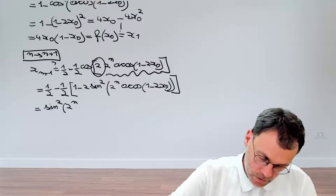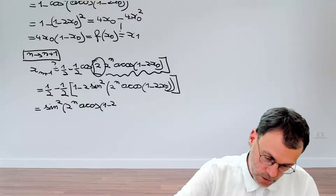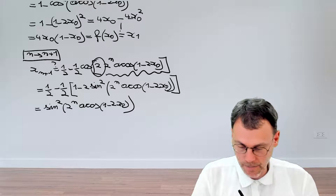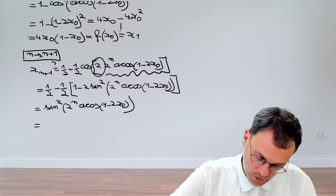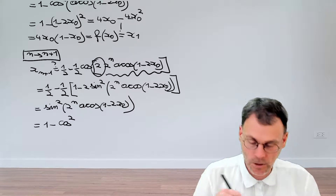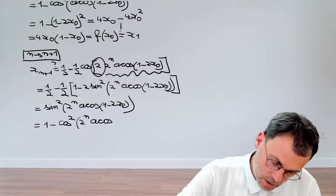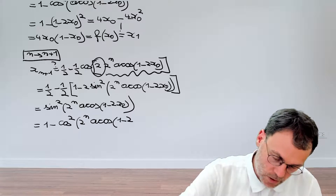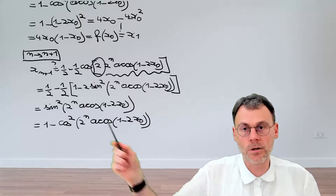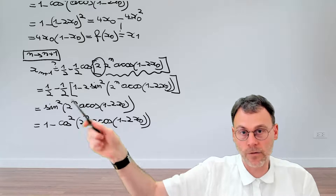That argument is two to the power of n times arc cosine of one minus two x₀. After similar cleanup as before, we get sine squared of two to the power of n times arc cosine of one minus two x₀, which becomes one minus cosine squared of that same expression. Here it seems we're stuck because cosine and arc cosine can't annihilate with stuff in between.